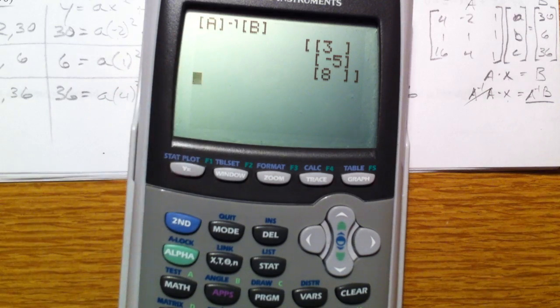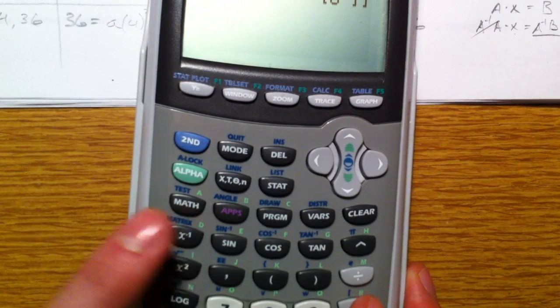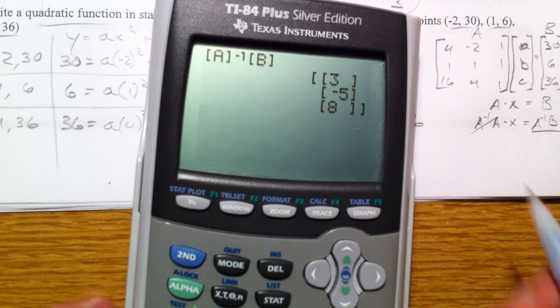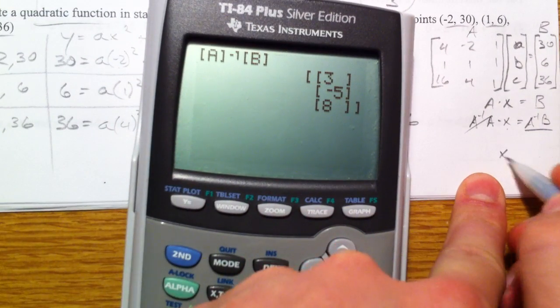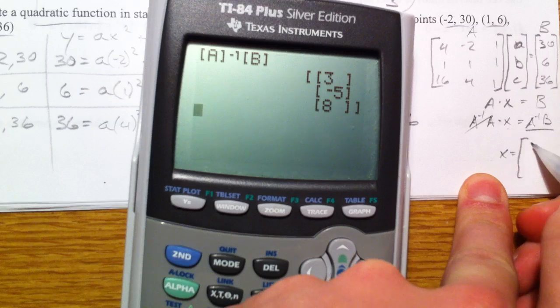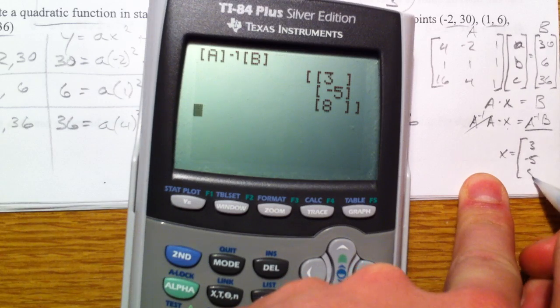Okay, so inverse of A. The inverse button again is the matrix button, x to the negative 1. And so x equals 3, negative 5, and 8.